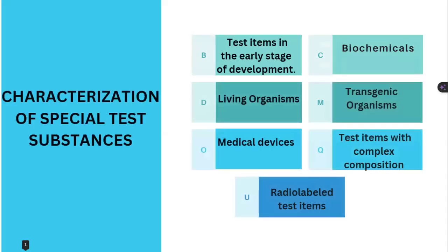Now, characterization of special test substances. Test substances may be classified as: test items in early stage of development, biochemicals, living organisms, transgenic animals, medical devices, test items with complex composition, and radiolabeled test items. We will see each one by one.